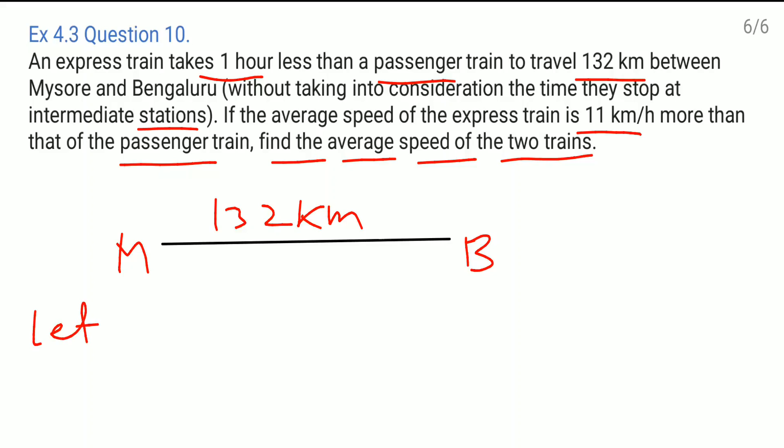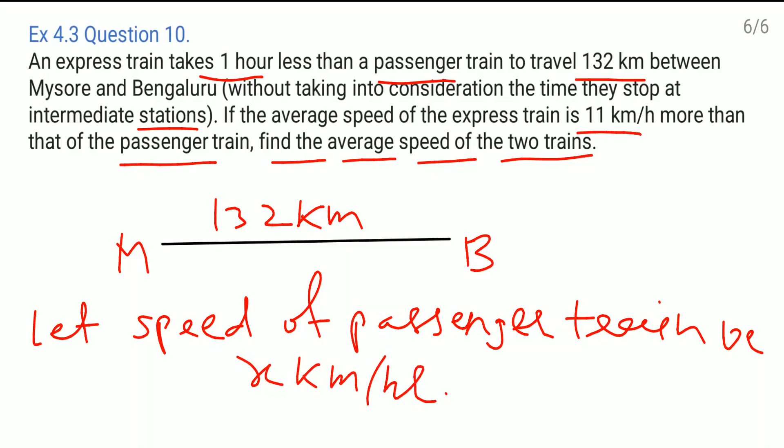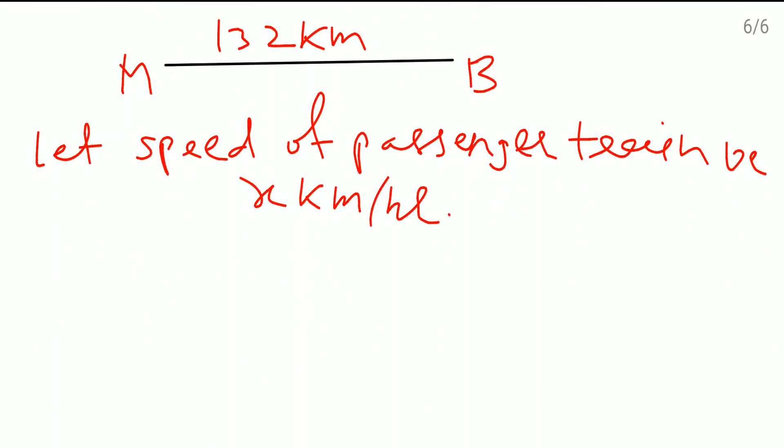Let the speed of passenger train be x km per hour. And for express train, it is x plus 11 km per hour. This is given. Now we should know this formula.